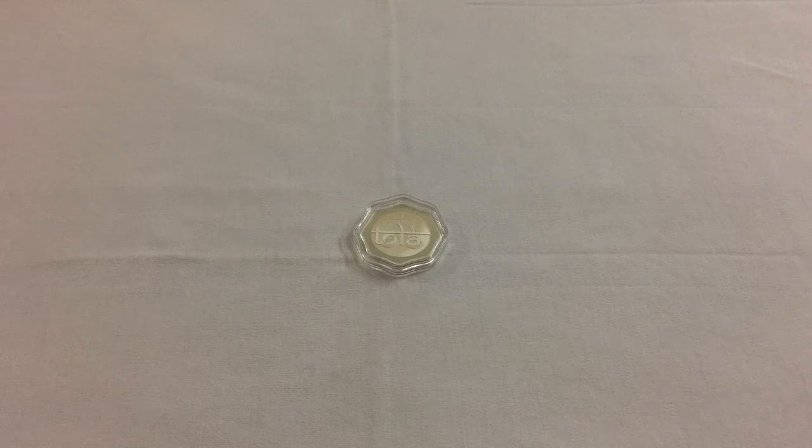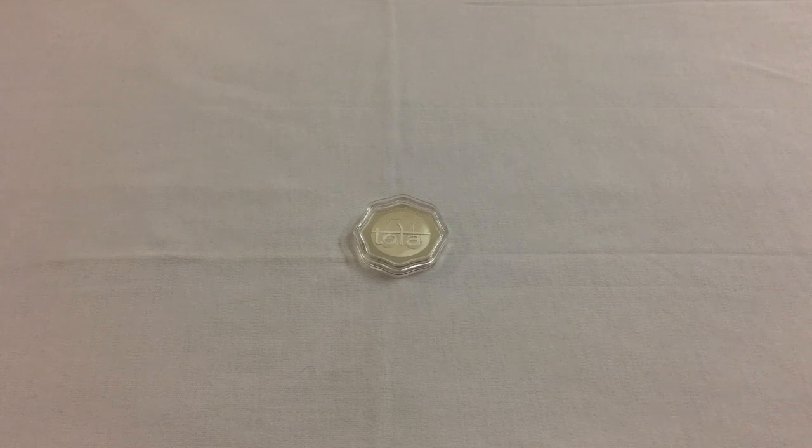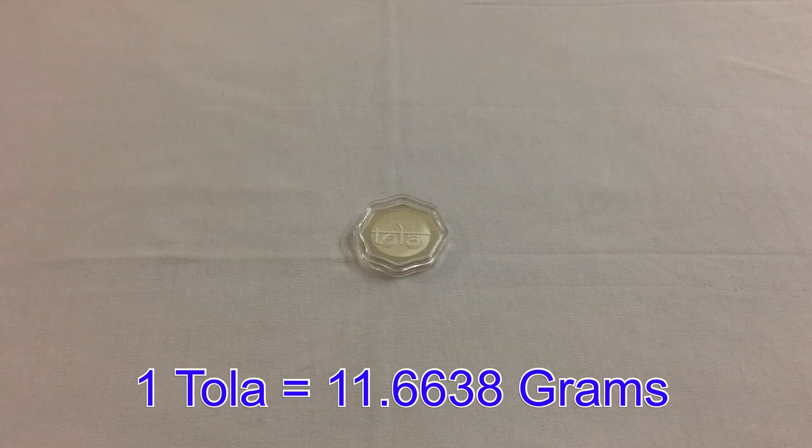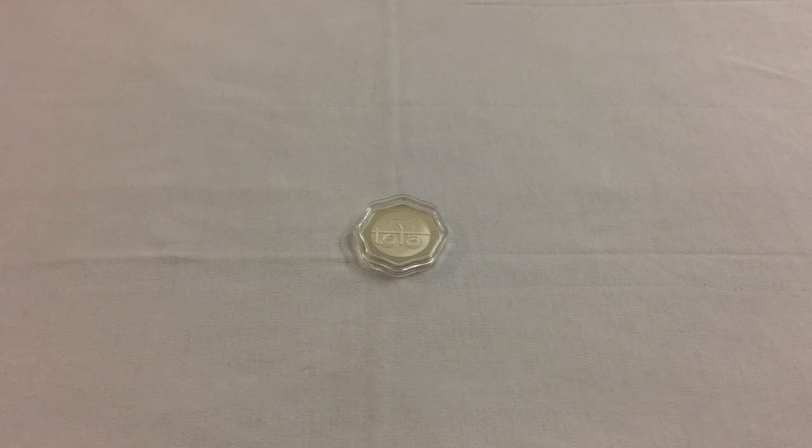Before going in detail, I would like to tell you that a Tola is a traditional ancient Indian unit of mass. 1 Tola is approximately 11.6638 grams, and 1 Tola is 3/8 of an ounce.